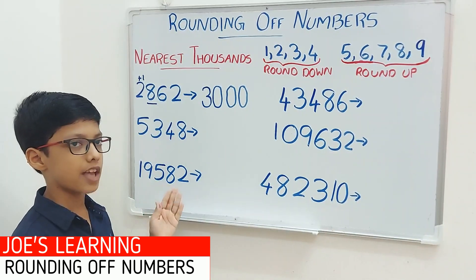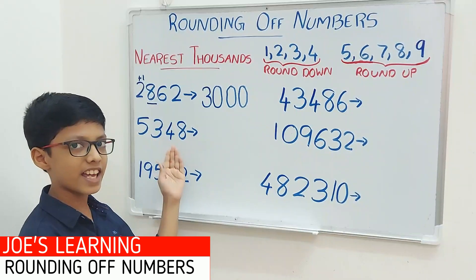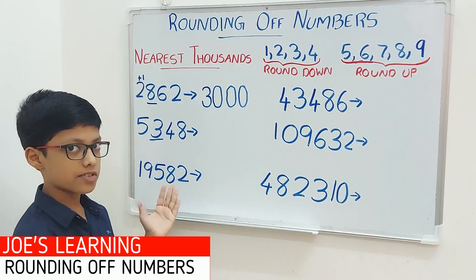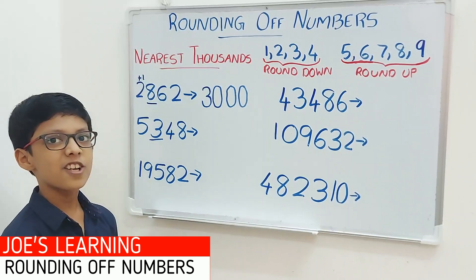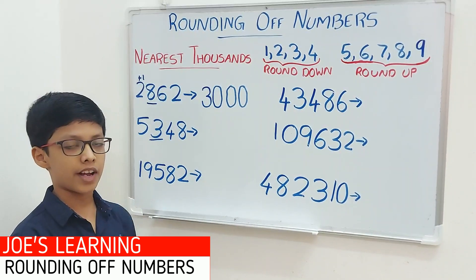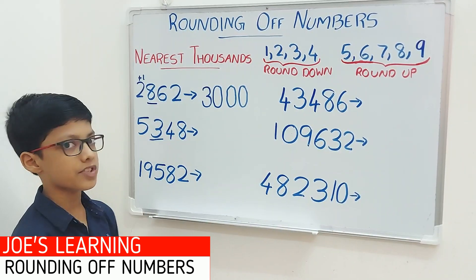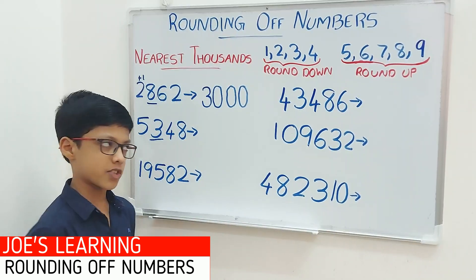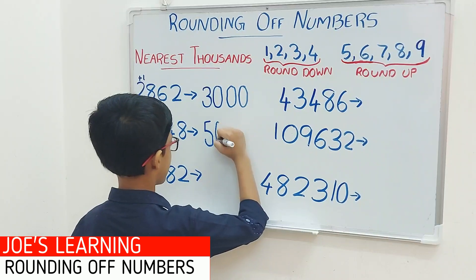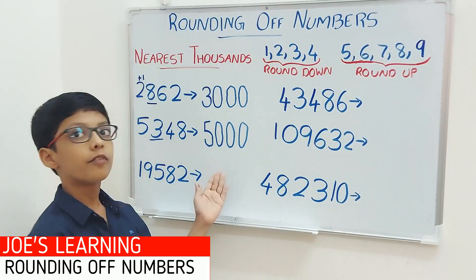Now let's move on to my second example, that is 5348. We have to look at the digit in the hundreds space — 3 is in the hundreds space. We compare it with 5: 3 is lesser than 5. So we have to put a 0 in the ones, tens and hundreds space and leave the thousands space as it is. So 5348 rounded off to the nearest thousand equals 5000.